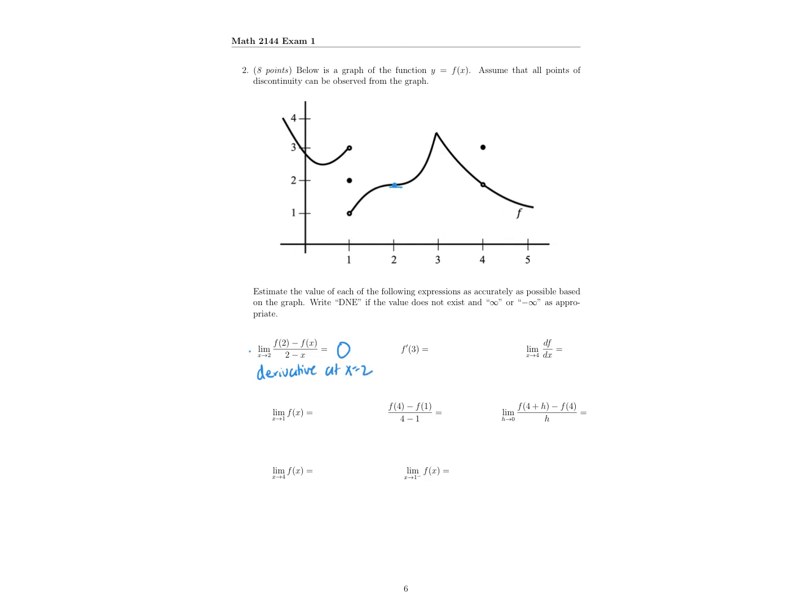Next, we have the limit as x approaches 1. So 1 is right here on the graph, and notice that it's defined at this point, but the two-sided limits are not going to be equal. From the right and the left, we're going to different values. For this limit to exist, we need the left and right-sided limits to be equal to each other, and since they're not, this limit does not exist.